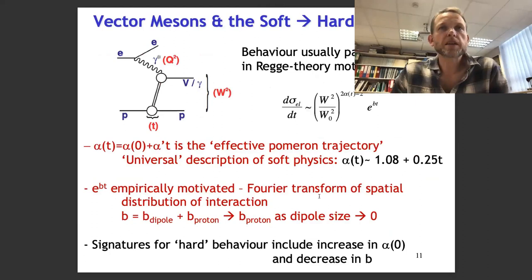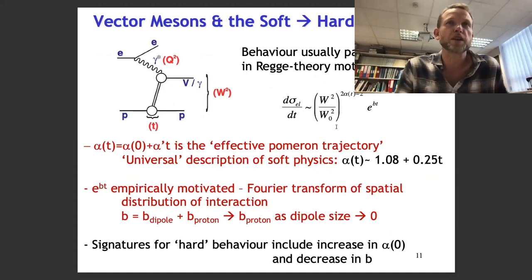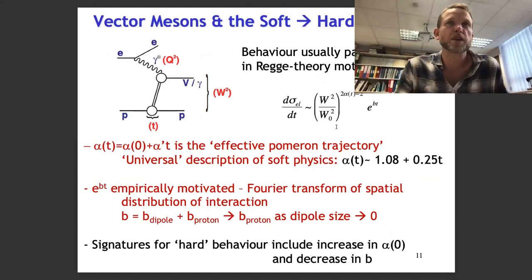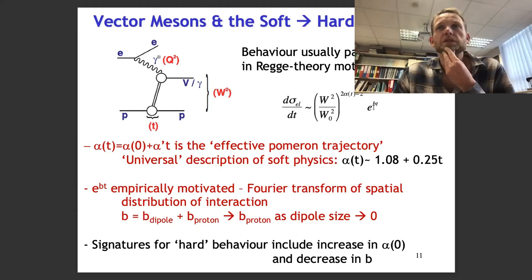Vector mesons beautifully illustrate the transition between the soft and the hard regimes — not a phase transition, but a transition from a region in which partons are good degrees of freedom to a region where they're less so. The phenomenology comes from energy dependencies which are power-law-like. The cross section dσ/dt goes like W² to a power — which contains this α(t) — times an exponential e^(bt). If you were given a series of lectures, there'd be a whole lecture on this α(t); this is Regge phenomenology, predating QCD, describing energy dependencies in terms of so-called Pomerons.